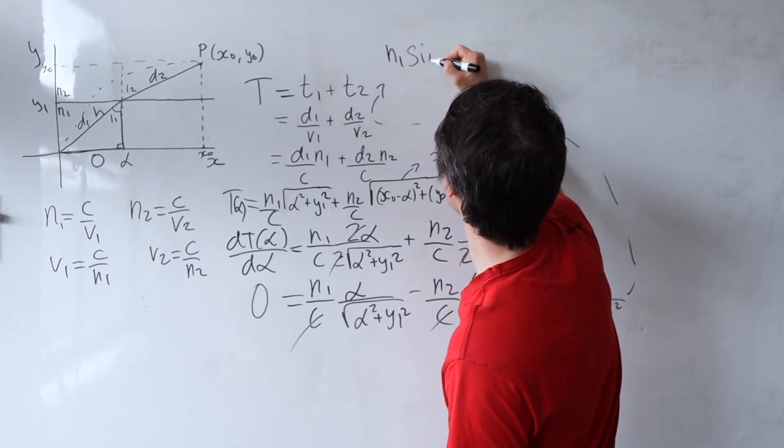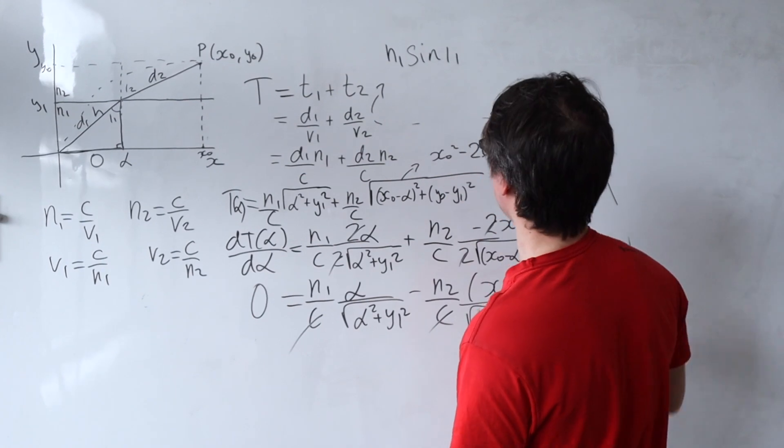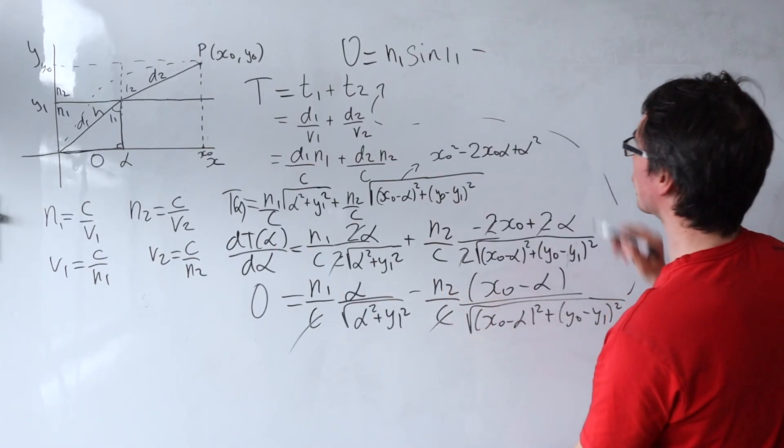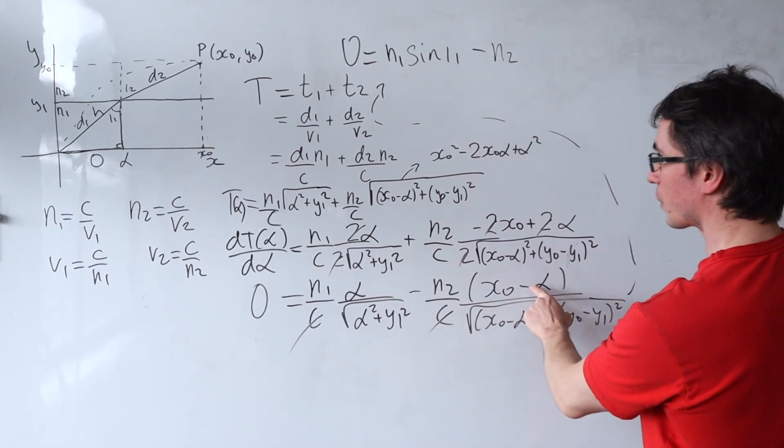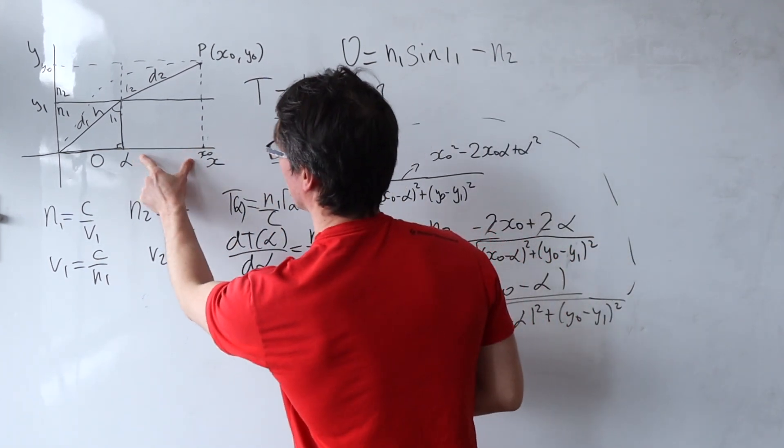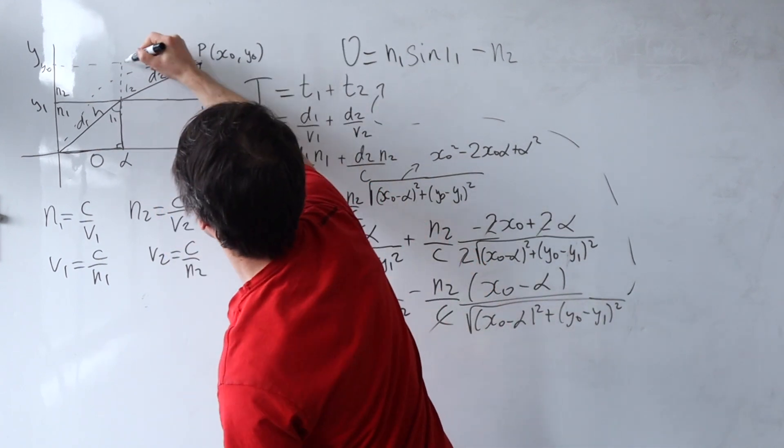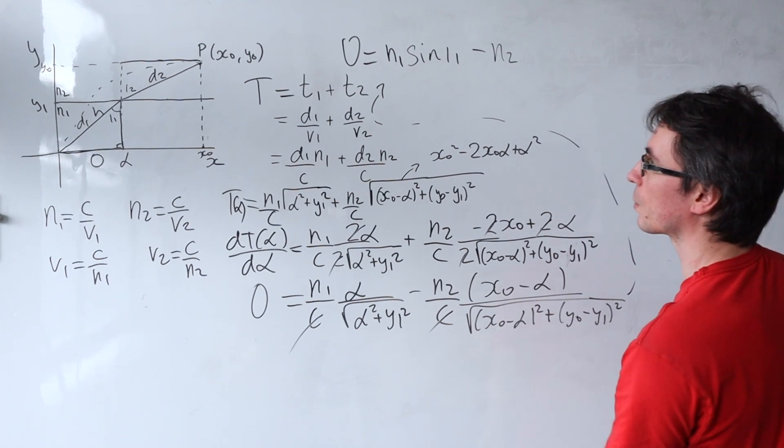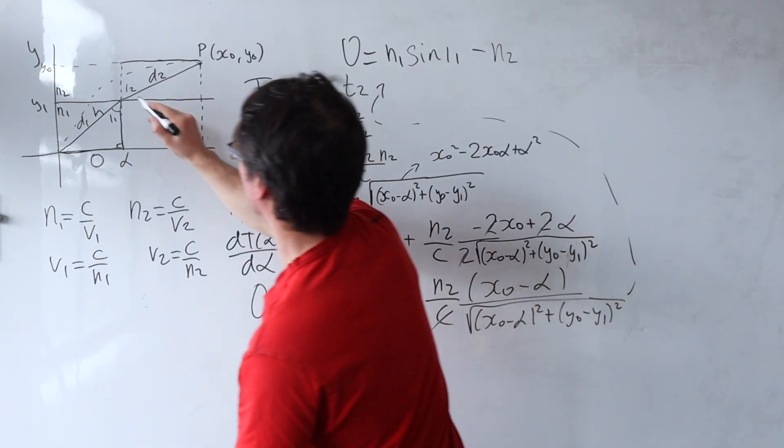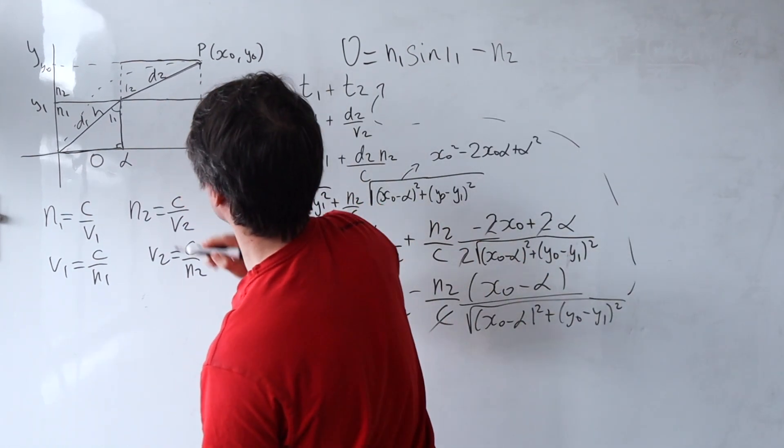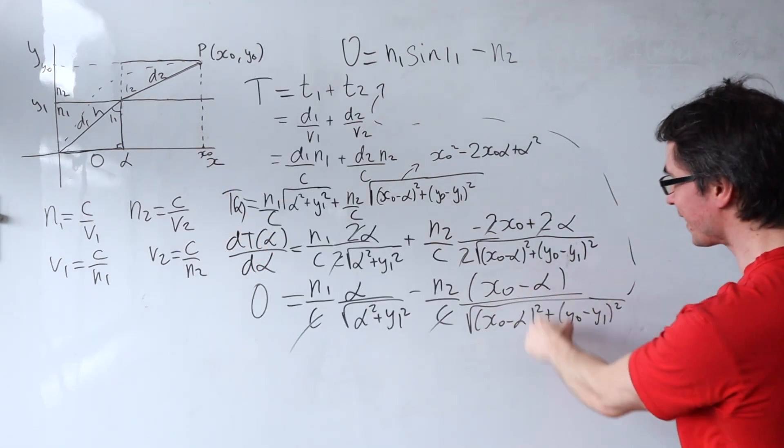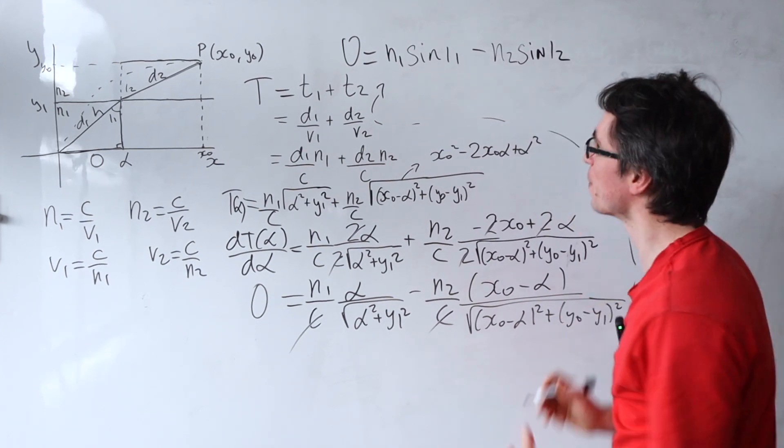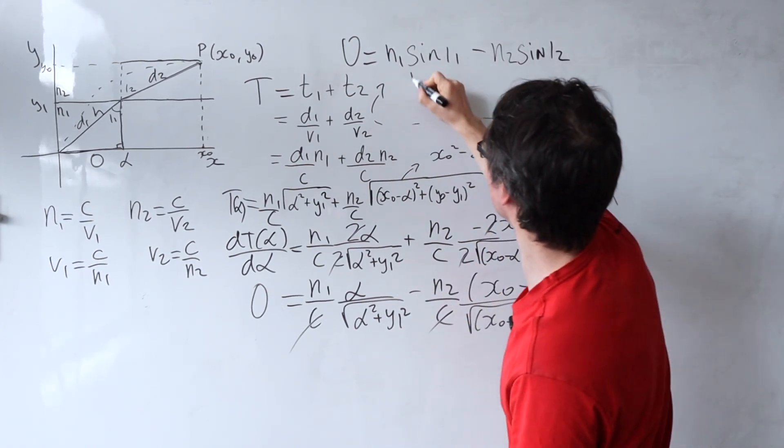Plus minus n2 and then this x0 minus alpha. Well that's just this distance which is essentially that divided by the square root of that over that. Well that's just the this hypotenuse d2. So once again this here is actually just the sine of i2 and we can just rearrange this and say that n1 sine of i1 has to be equal to n2 sine of i2.